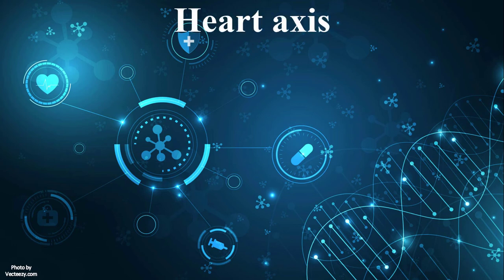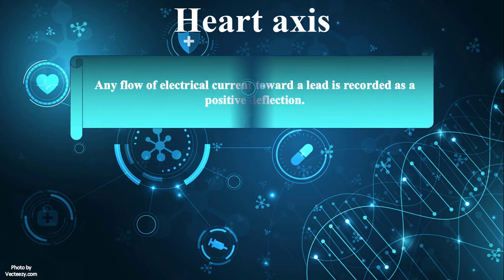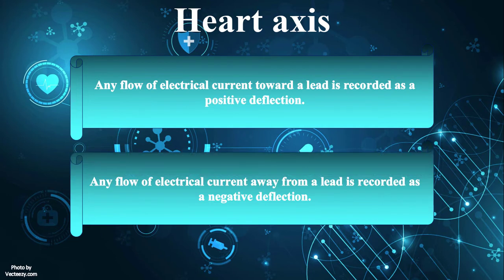In order to understand cardiac axis, we are supposed to master the basic concepts of the lead system and cardiac electrical activity. As a general rule, any flow of electrical current toward a lead is recorded as a positive deflection. On the other hand, any flow of electrical current away from a lead is recorded as a negative deflection.